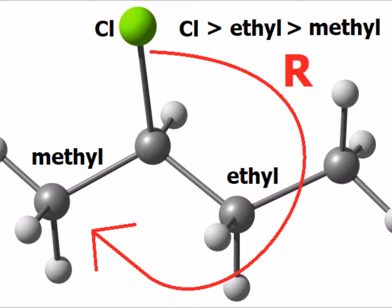We now apply the Cahn-Ingold-Prelog rules. The highest priority substituent is chlorine. The next highest priority is the ethyl group, and then the least priority of the groups that are facing us is the methyl group.